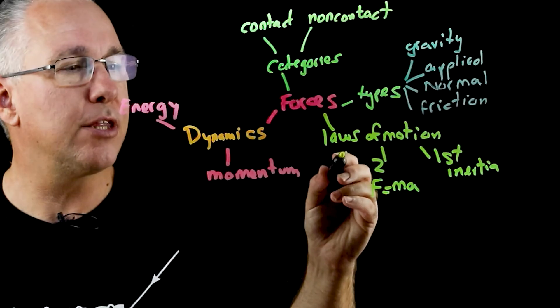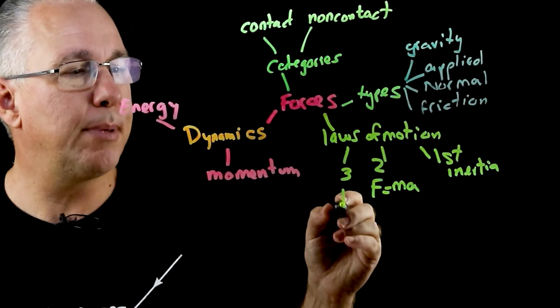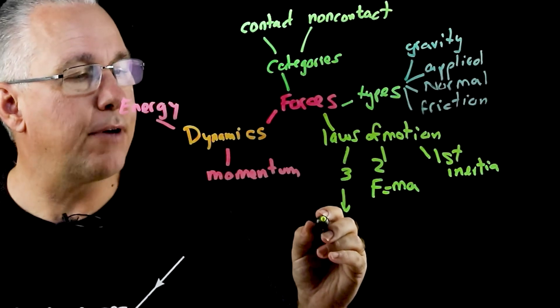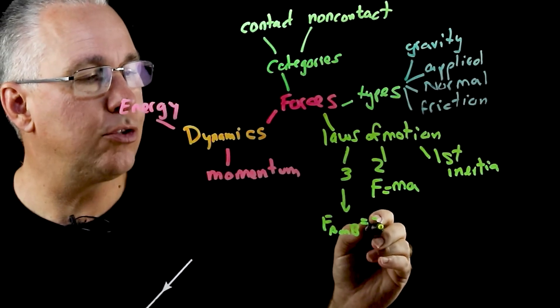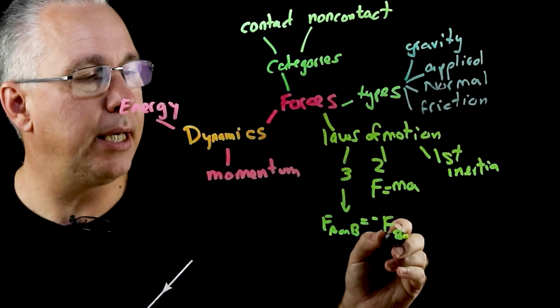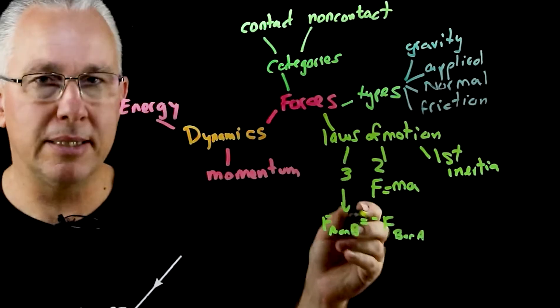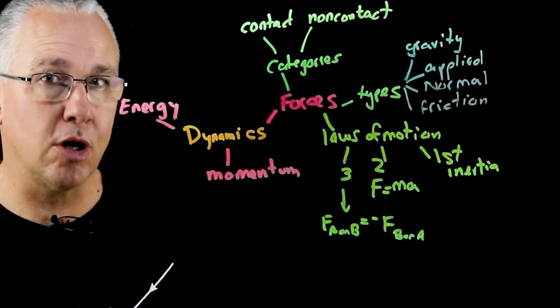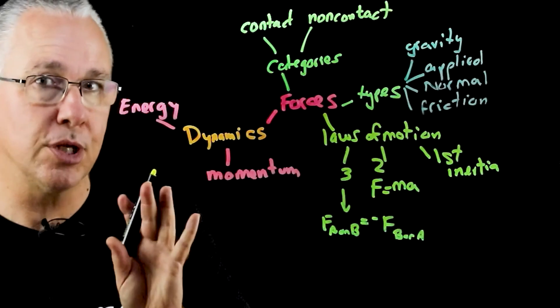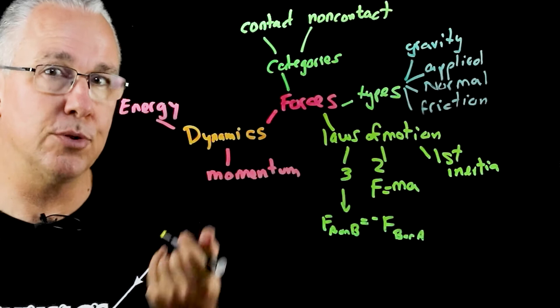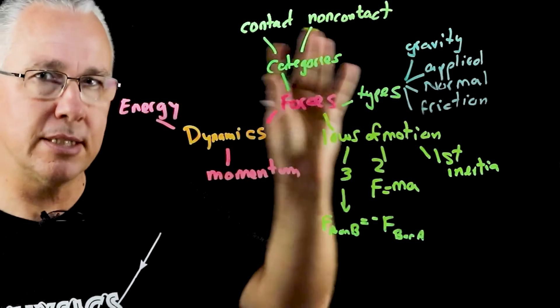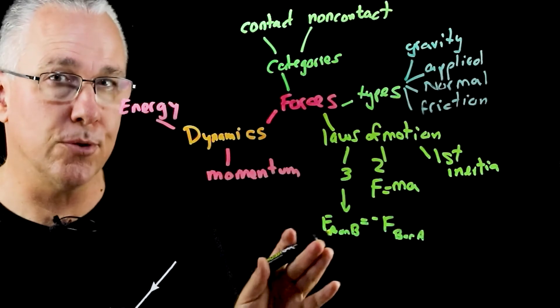And then of course is the third law, which talks about really that the force of A on B is equal in magnitude to the force of B on A, but the negative here suggests that the force is in the opposite direction. If I apply a force on something in that direction, then it applies an equal and opposite force in the opposite direction. So that sort of summarizes the concept of force.